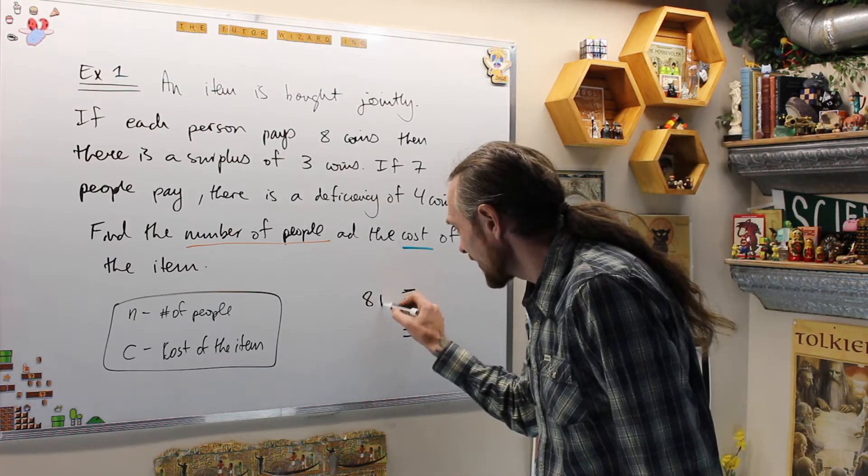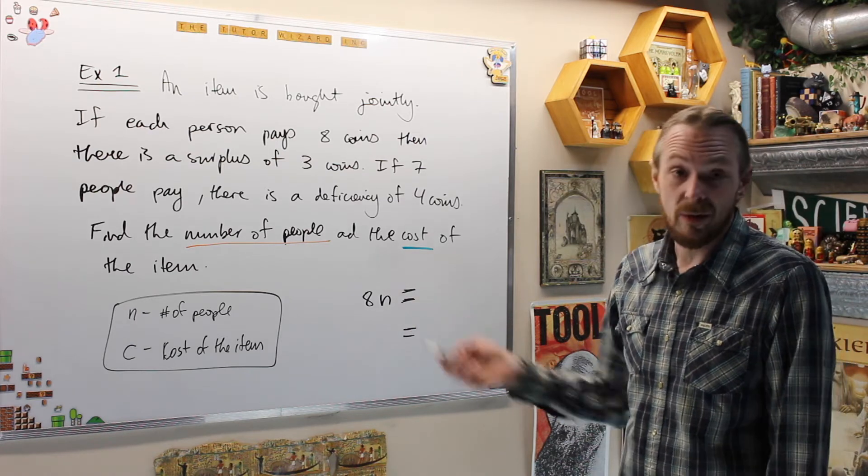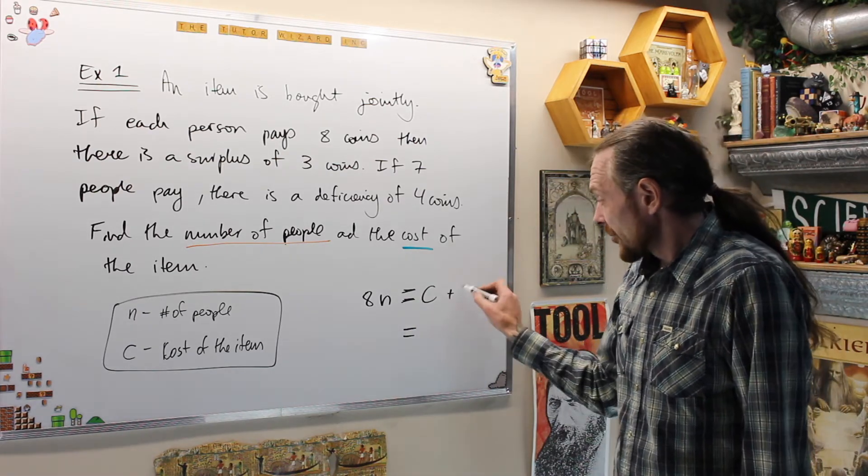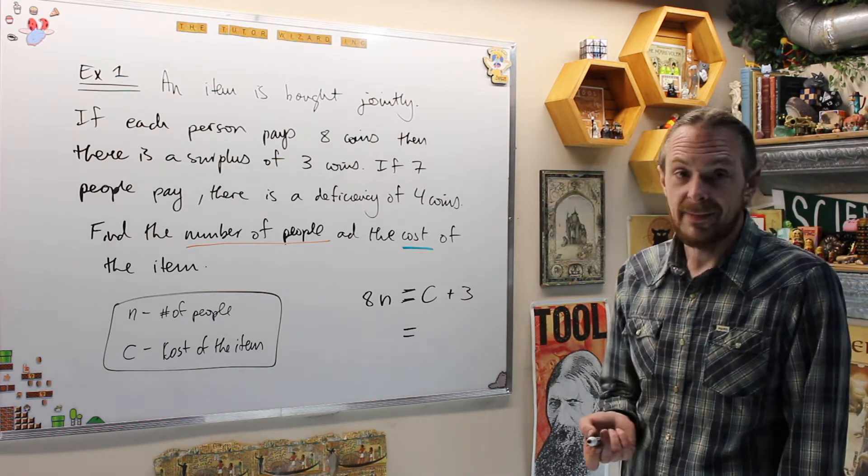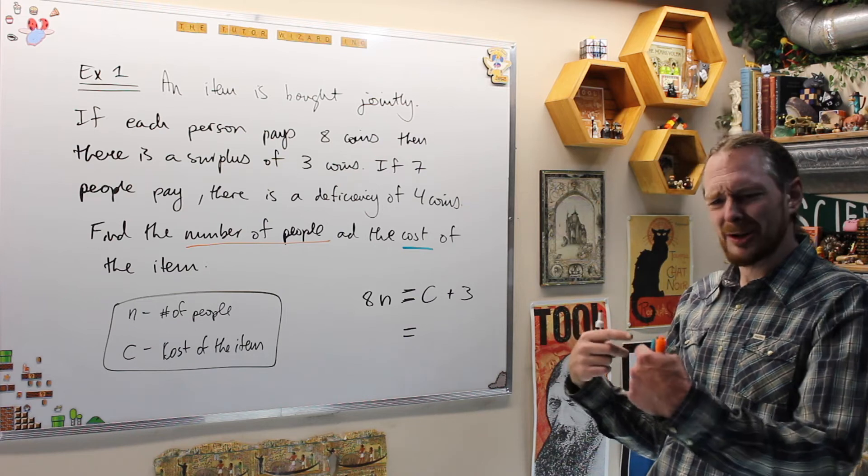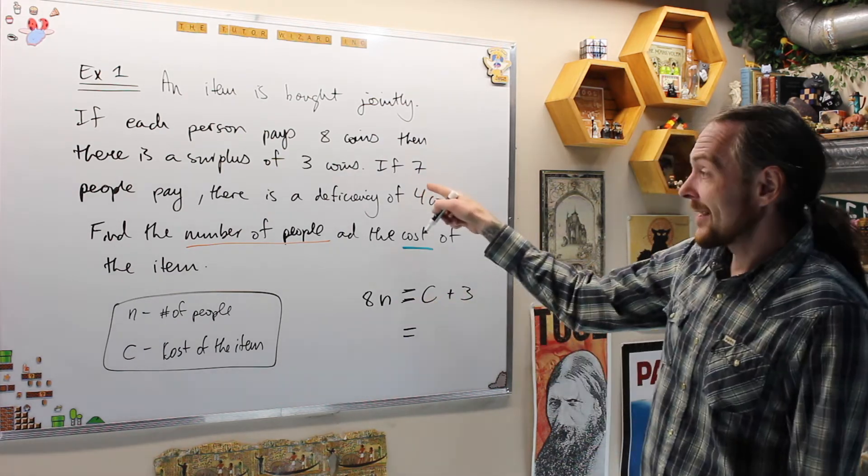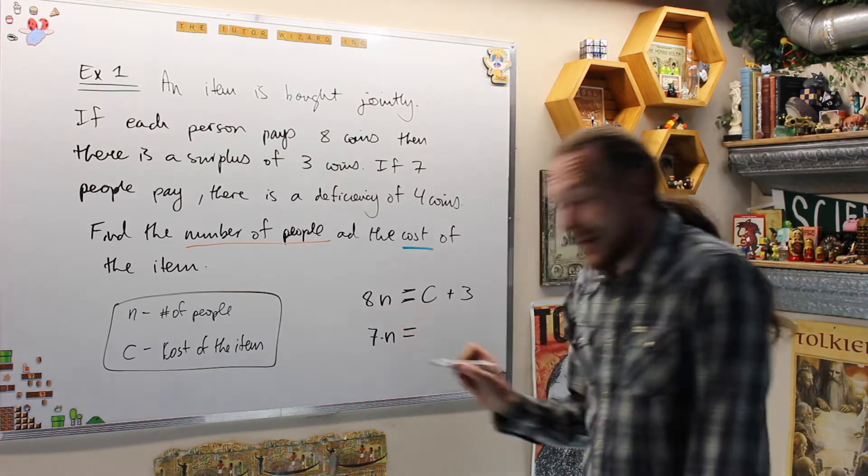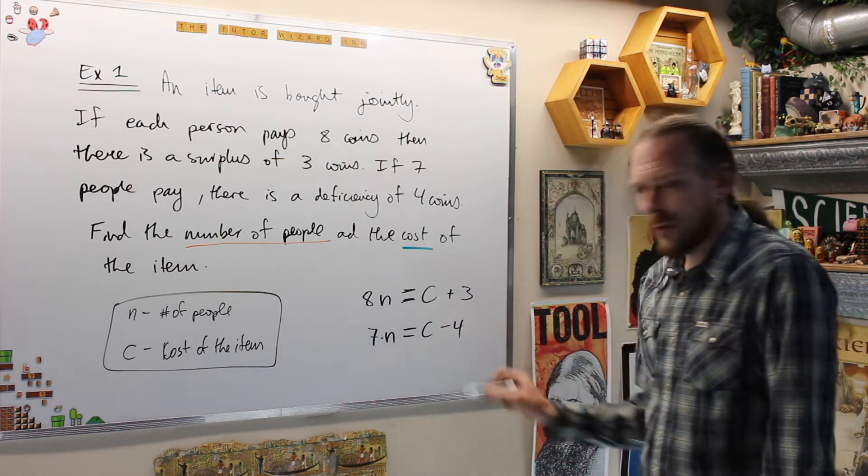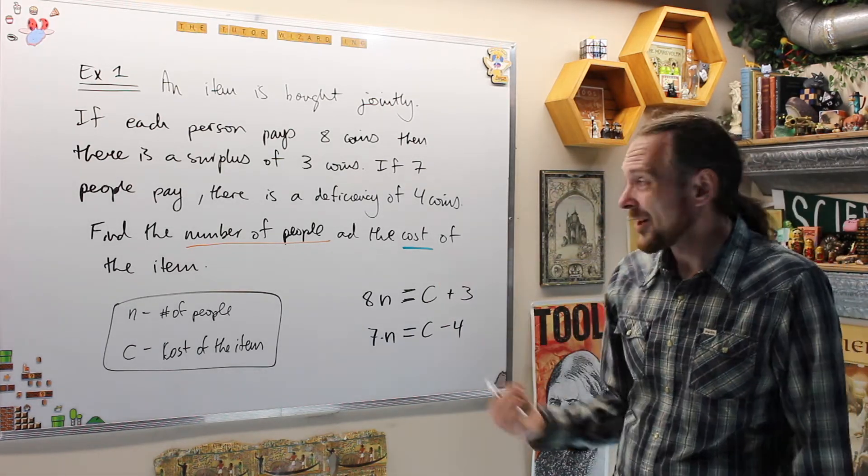If I had eight times N, the number of people I had, if they paid eight coins times the number of people I had, that would be the cost plus three, a surplus. And again, if I thought it was a minus three or something, if we try that, but then something will go wrong, you'll have negative people, and that tells you that you've set things up wrong. The second sentence says seven coins times the number of people will end up giving me the total cost of the item, but I'll be short four. So that's the minus, it will be a deficiency of four.